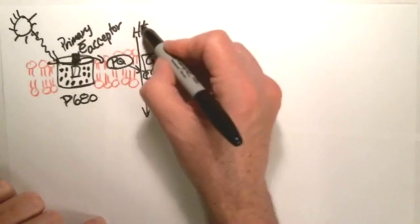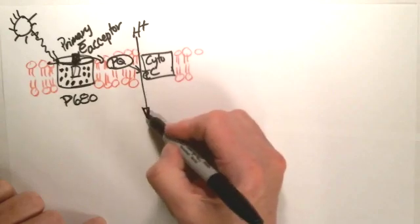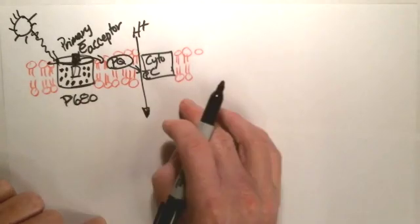In that process, again, a hydrogen ion, a proton, is then pumped inside this thylakoid membrane.